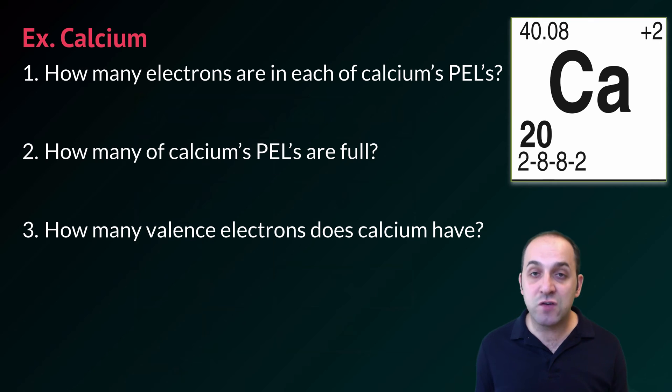So how many electrons are in each of calcium's principal energy levels? The answer is 2 and then 8 and then 8 and then 2. And so this is always going to be read from left to right. In the first principal energy level there are 2, in the second there are 8, in the third there are 8, and in the last there are 2.